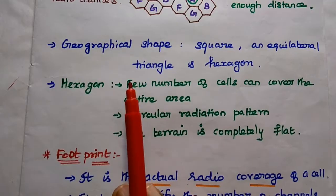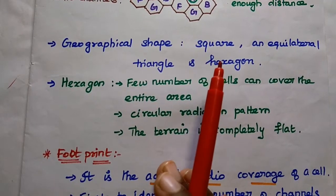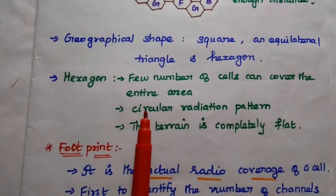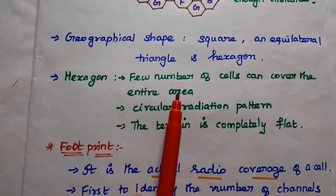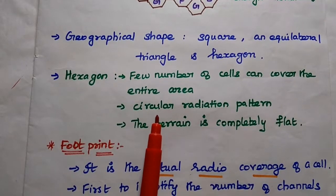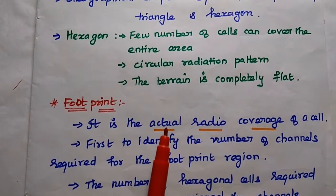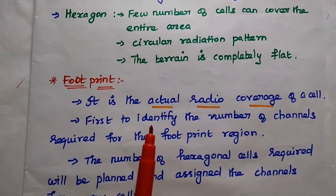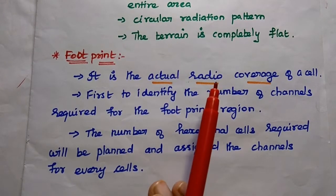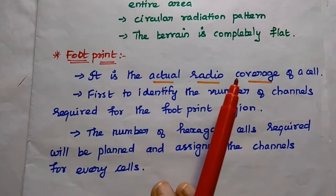Whenever we design the geographical area, we can prefer three shapes: square shape, equilateral triangular shape, and hexagonal shape. The hexagonal shape is widely used because fewer cells can cover the entire area, it approximates the circular radiation pattern, and the terrain is assumed to be completely flat. For these reasons, we prefer hexagonal shape. Next, to design the frequency reuse process, we first need to find out the actual radio coverage for a cell — that is called the footprint. Footprint means actual radio coverage of a cell.